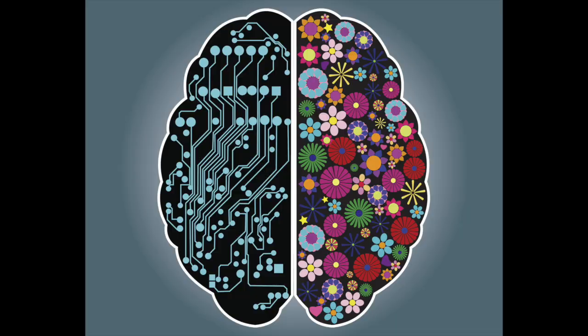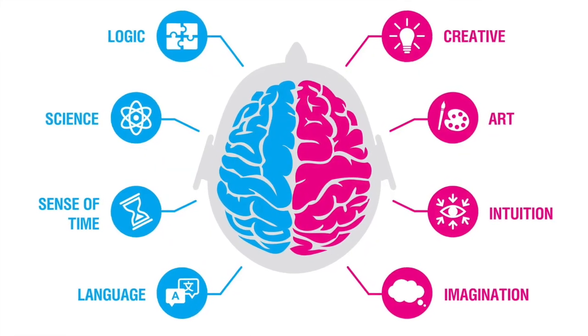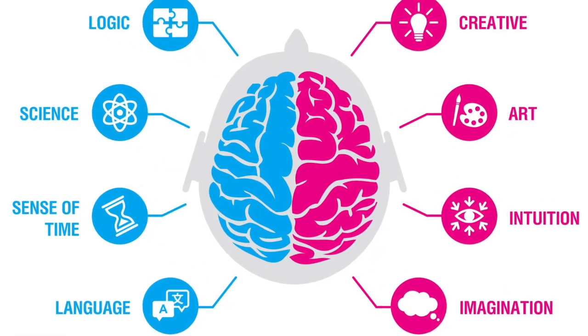Because we are learning about different types of thinking, it's important briefly to understand how the brain works, because obviously the brain is where all the thinking takes place. Very briefly, in a nutshell, we have a left hemisphere and a right hemisphere, each of which is specialised for different tasks and different roles — each side performs different functions.